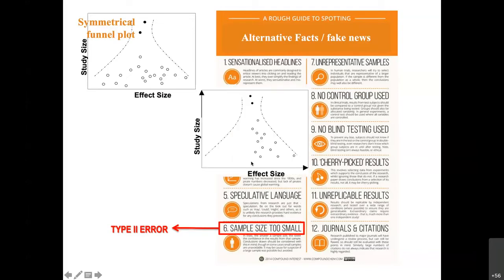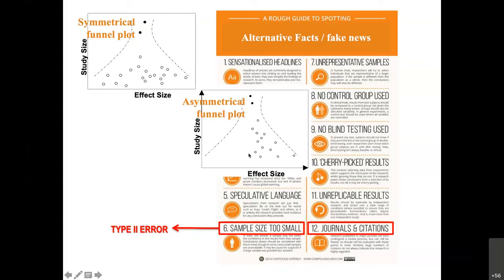But you can also have studies where small studies on one side of the plot are missing. This type of plot is called an asymmetrical funnel plot, and it arises because journals are more interested in publishing a particular type of result on a particular topic. In this case, the studies on this side of the funnel plot appear to be missing inside the funnel. Can you see that clearly?